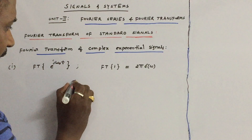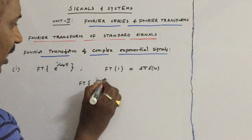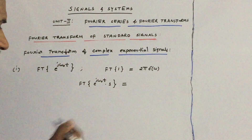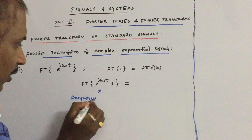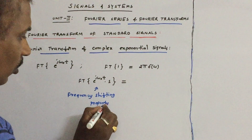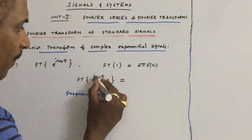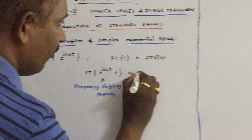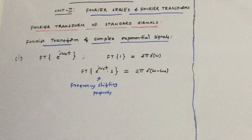Now use the frequency shifting property. What is the Fourier transform of e^(jω₀t)? That means if 1 is multiplied with e^(jω₀t), as explained in the frequency shifting property, if any signal is multiplied with a complex exponential signal, ω is simply replaced by ω−ω₀. Therefore, the answer is 2π·δ(ω−ω₀).